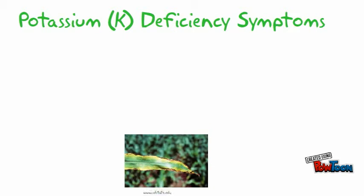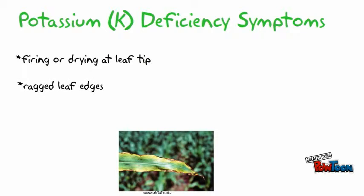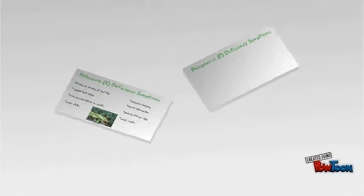Potassium and phosphorus are also very likely to be deficient in Missouri corn production. Potassium deficiency symptoms include firing or drying at the leaf tips, ragged leaf edges, iron accumulation in joints, weak stalks, excessive lodging, shortened internodes, poorly filled ear tips, and weak roots.